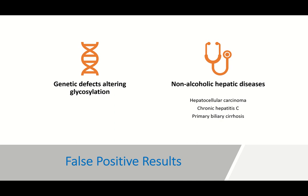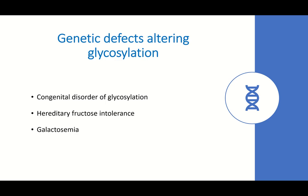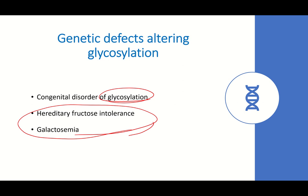In non-alcoholic persons also, the level of CDT can be high — we call this a false positive condition. This can happen due to a genetic defect altering glycosylation or certain hepatic diseases unrelated to alcohol, such as hepatocellular carcinoma, chronic hepatitis C, and primary biliary cirrhosis. The genetic defect is known as congenital disorder of glycosylation, where the capacity to glycosylate proteins is itself affected. Hereditary fructose intolerance and galactosemia can also alter the glycosylation pattern, giving false positive CDT results.